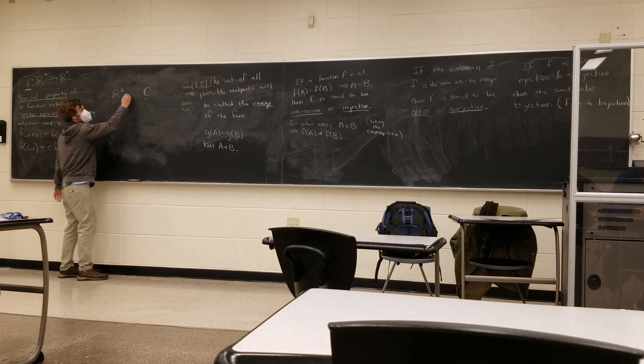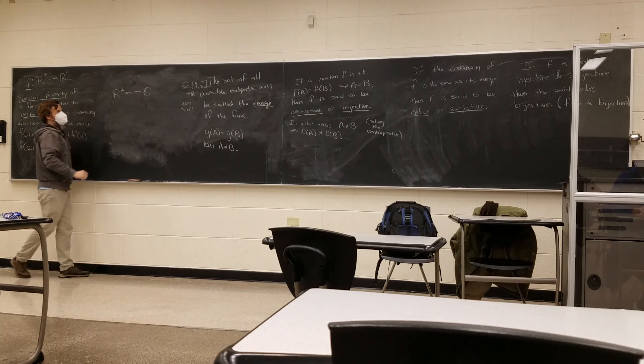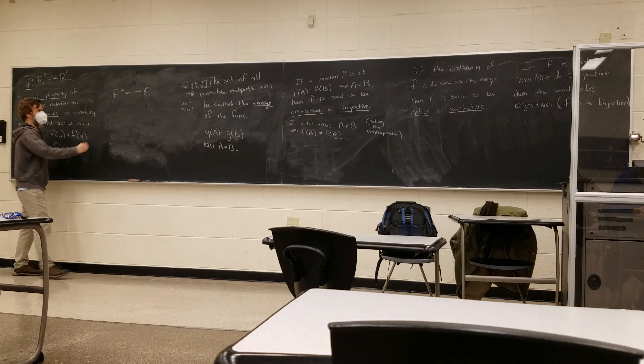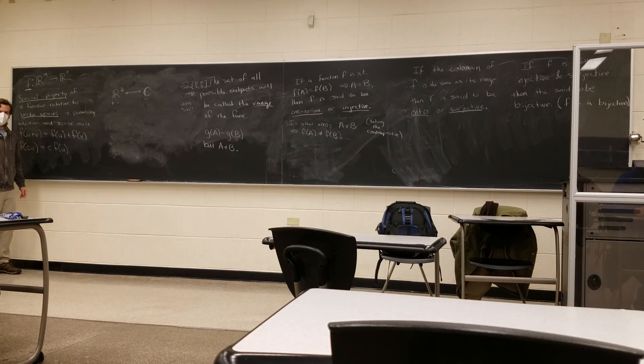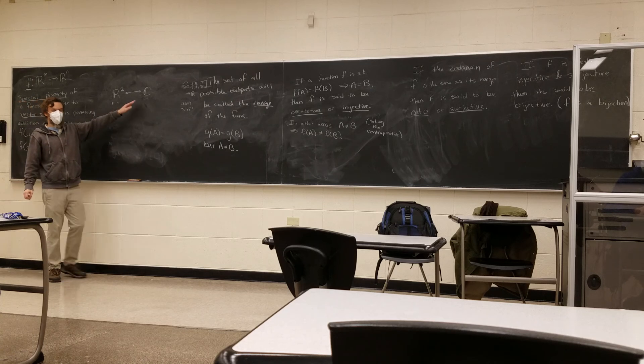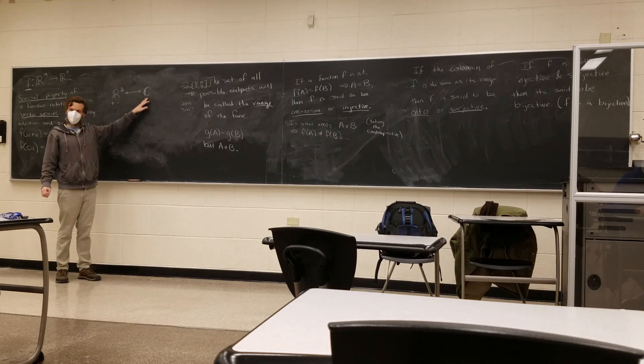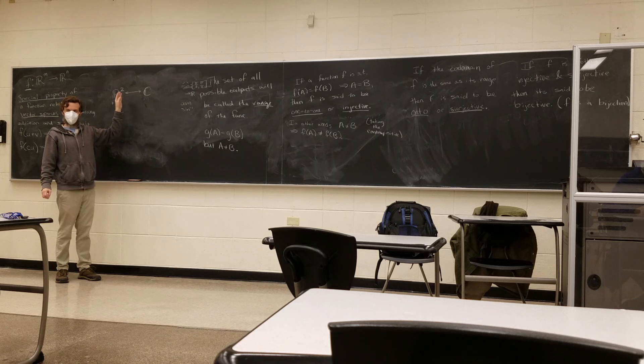So you see that there's a direct mapping between R2 and C, where over here we can talk about addition and multiplication. Over here though, we have C the field, not C the vector space of real numbers.